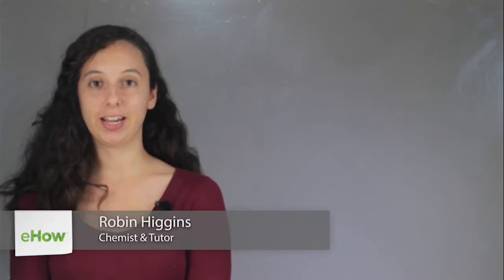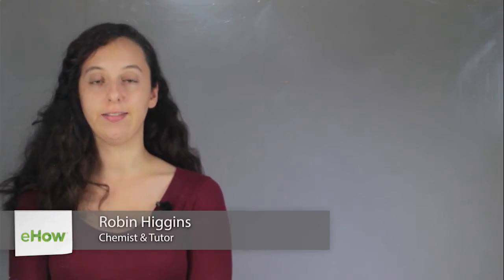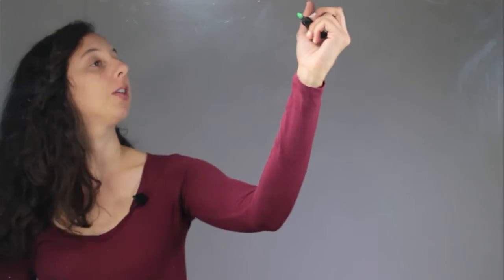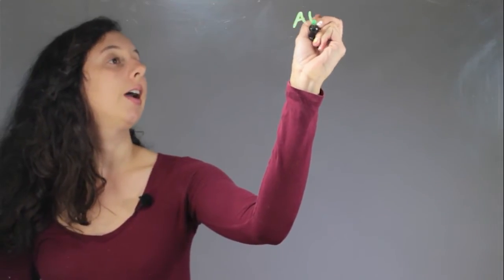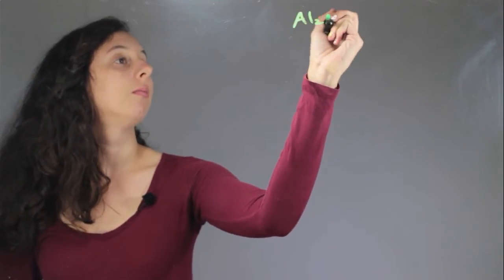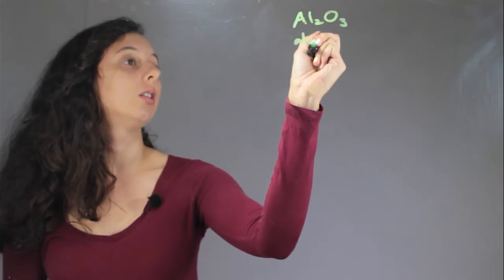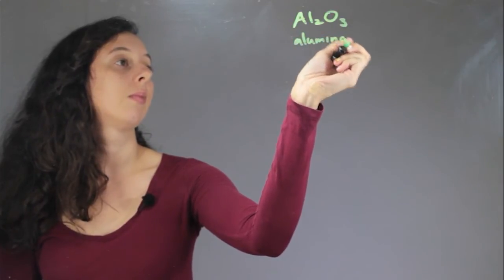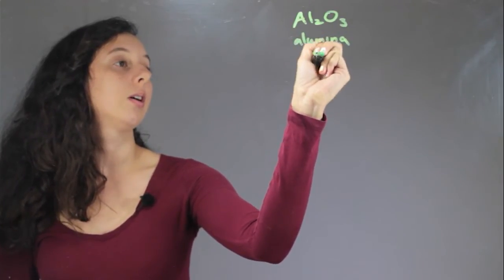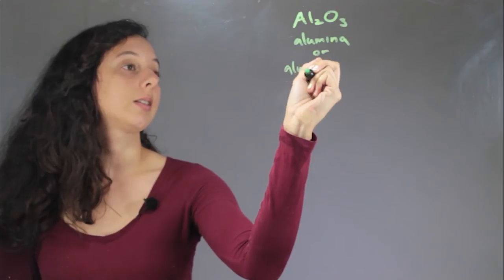Hi, I'm Robin Higgins, and this is the solubility of alpha versus gamma alumina. So what is alumina? It's a molecule with a chemical formula Al2O3 called alumina or aluminum oxide.